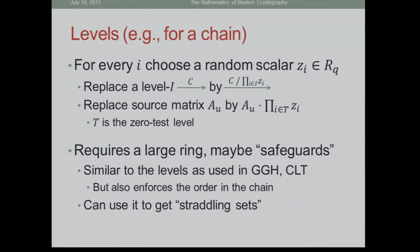Here's another variant: levels. You can have levels here — just divide the encoding by a denominator Z and multiply the product of Z_i's into the zero test. Everything works. You do need large rings for this, because otherwise you have a matrix where a single scalar, when multiplied in, gives something small — so over Z_Q it's a lattice of dimension one and you can find it. With large rings, you get all the levels you like from GGH and CLT back.